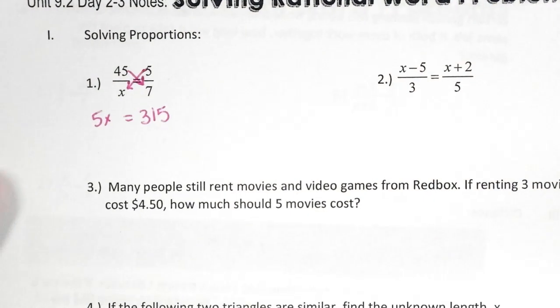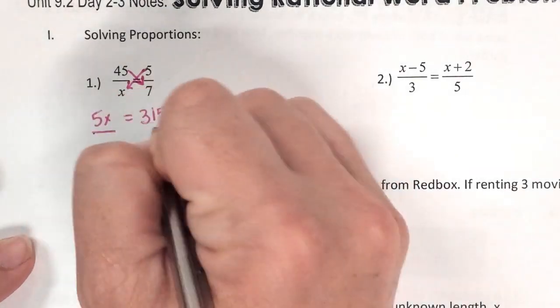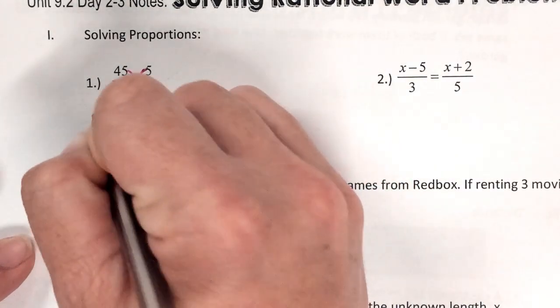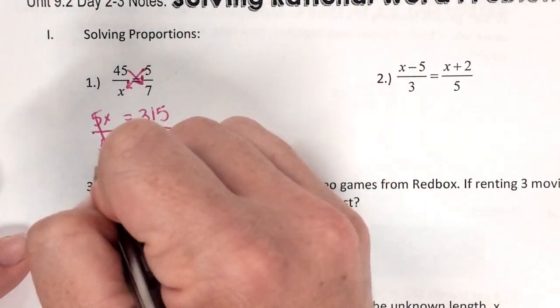Okay, now what do I do to solve for x? Divide. Divide both sides by what? 5. And now I have x equals what? 63. There's my answer.